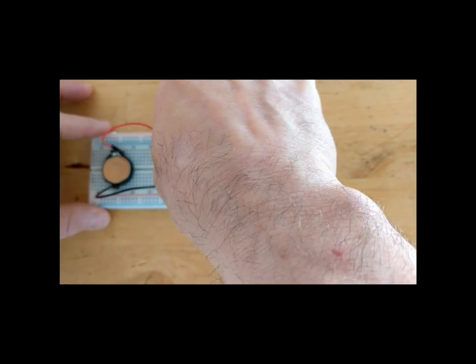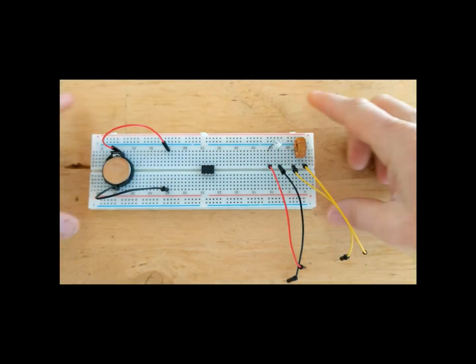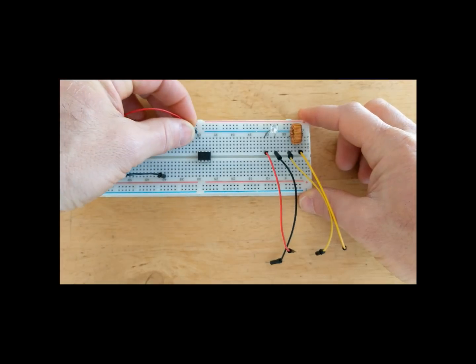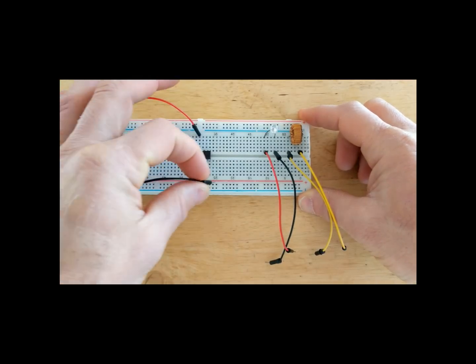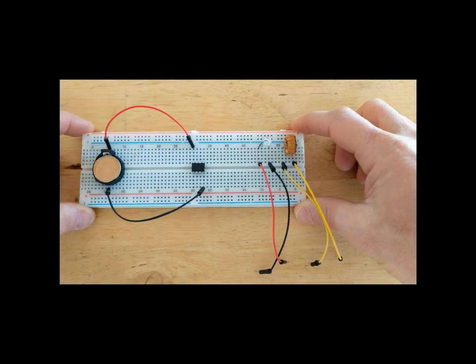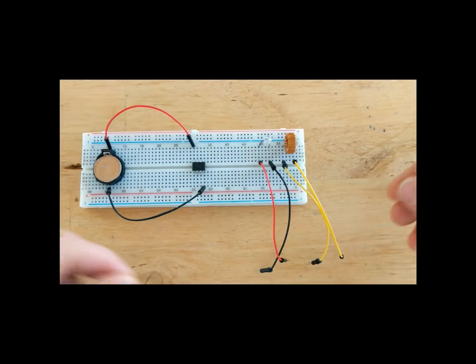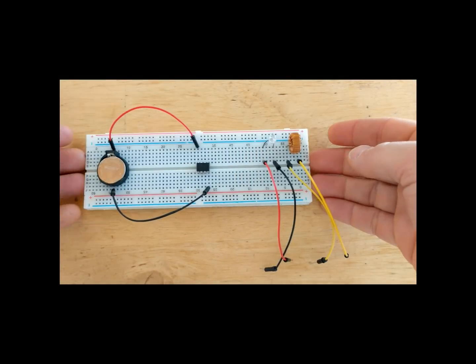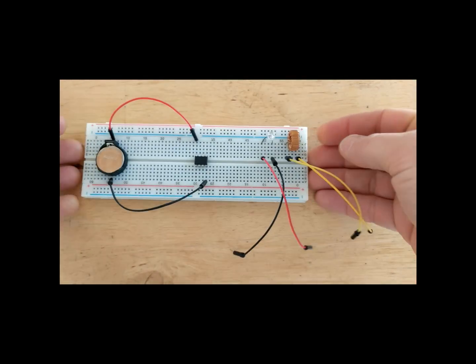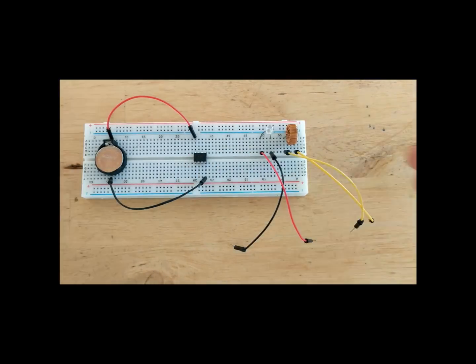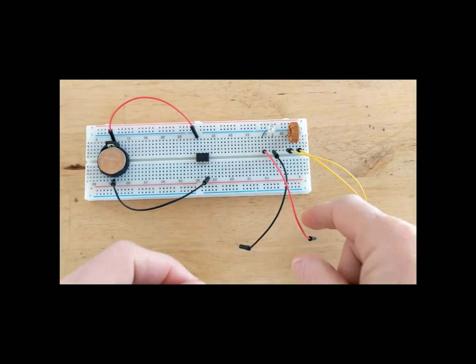But if we connect it up as a boost converter, we should be able to boost that 1.7 volts up to the 3.7 volts that we need to light the LED. Now again, I just want to make it clear that these are all stock parts, and there's no tricks, nothing hiding underneath the breadboard. If you took these same parts, programmed up the chip, and connected them the same way, you would get the same results.